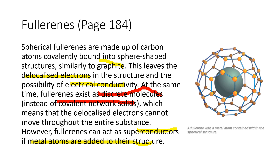However, fullerene can act as a superconductor. Some resources say it can conduct electricity if metal atoms are present within the structure. The metals being good electrical conductors allow the fullerene to conduct electricity as a whole. Technically, fullerene can only conduct electricity if metal atoms are present, because it exists as a discrete molecule and is not a covalent network solid.